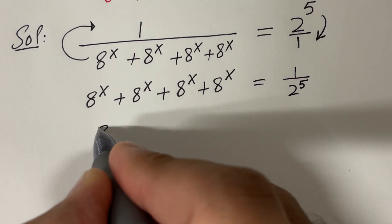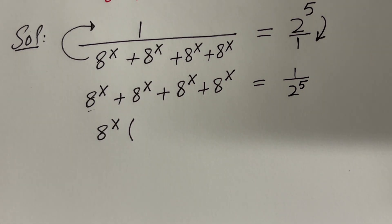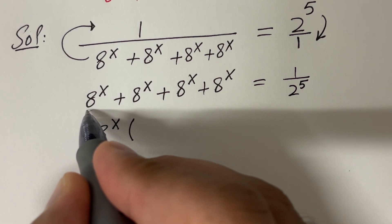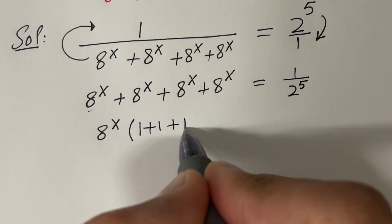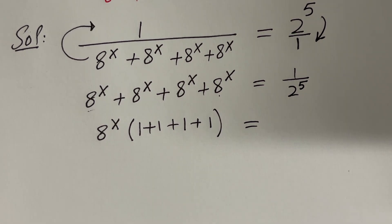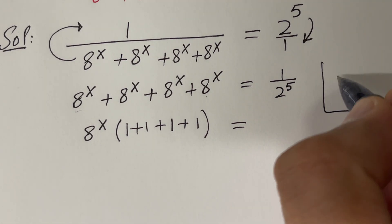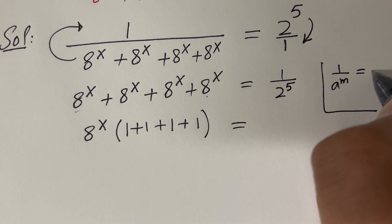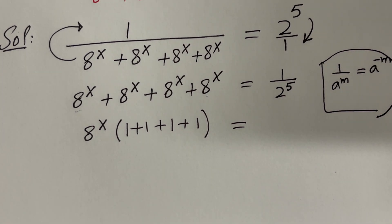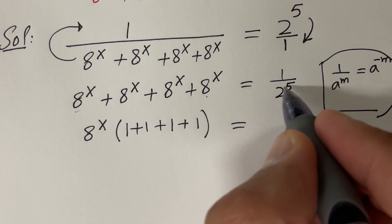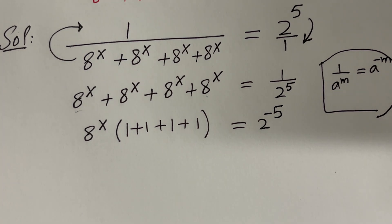Let's simplify the left hand side. The left hand side is 8 raised to the power x. Since 8 raised to the power x appears in each of these terms, we can factor it out as common: 8 raised to the power x times (1 plus 1 plus 1 plus 1). Now for the right hand side, using the rule that 1 over a raised to the power m equals a raised to the power minus m — the exponent becomes negative when moving from denominator to numerator.